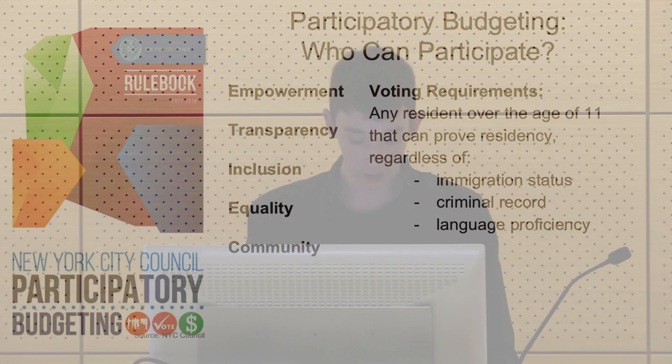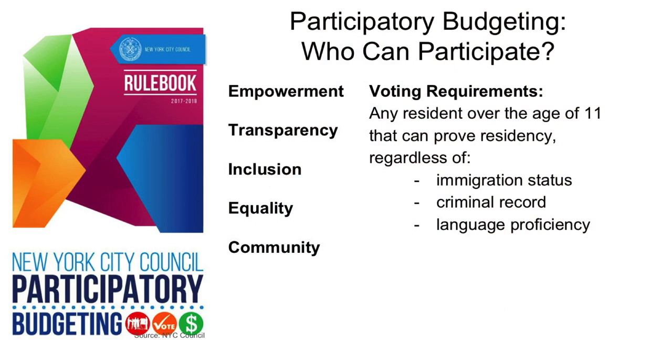As outlined in the 2017 rulebook, participatory budgeting has several principles: empowerment, transparency, inclusion, equality, and community. As such, participatory budgeting is an attempt at a more transparent mode of funding that focuses on surpassing barriers and pursuing civic engagement with historically disenfranchised communities. This is evident in the voting requirements — anyone over the age of 11 can participate regardless of immigration status, criminal record, or English language proficiency. All that is needed is proof of residency within the district.